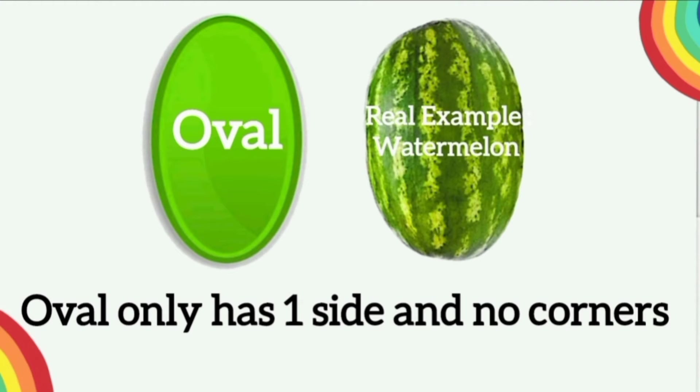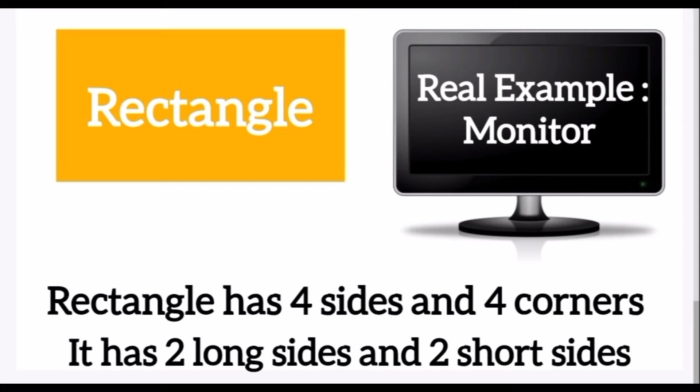Oval: oval has one side and no corners. A real example of an oval is watermelon.